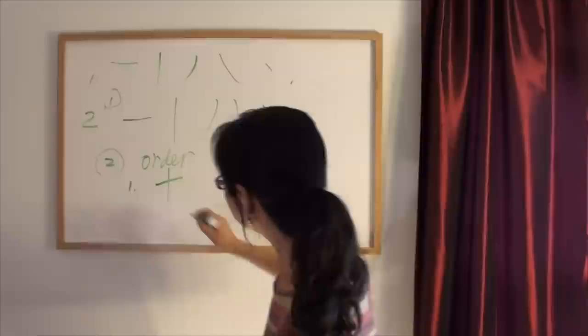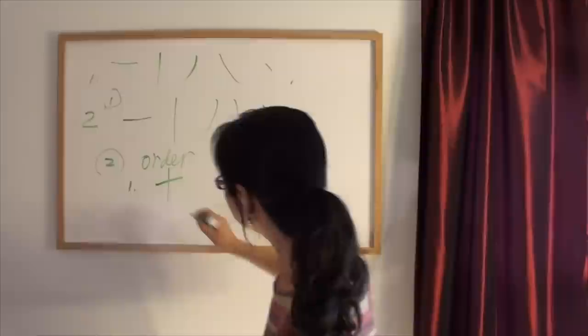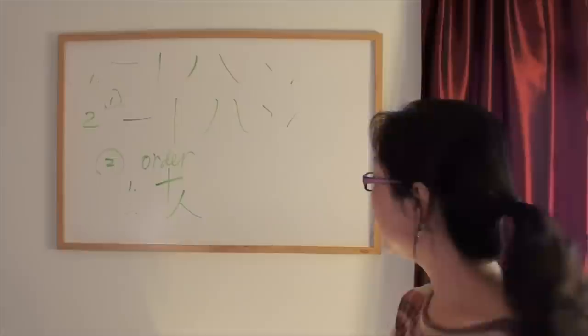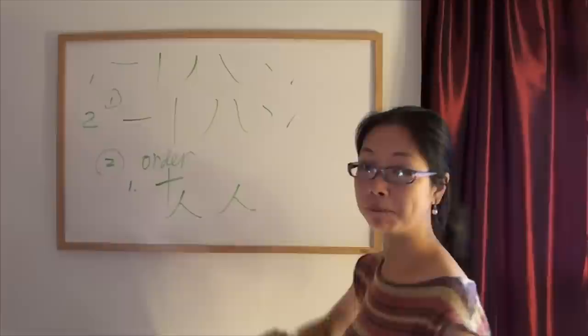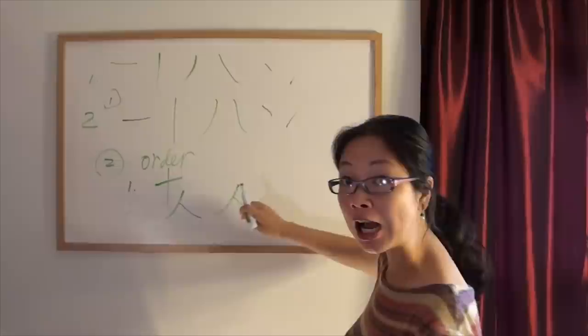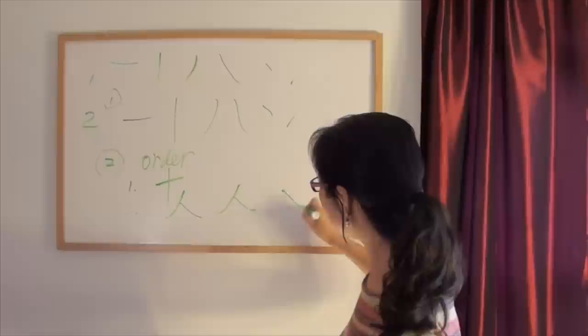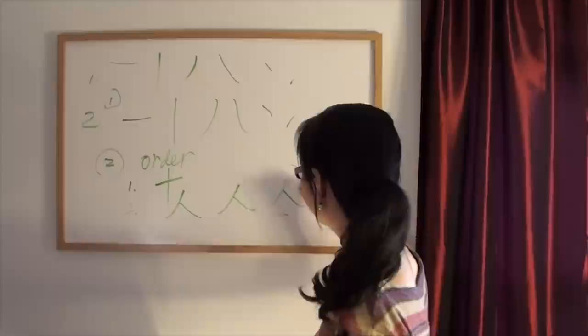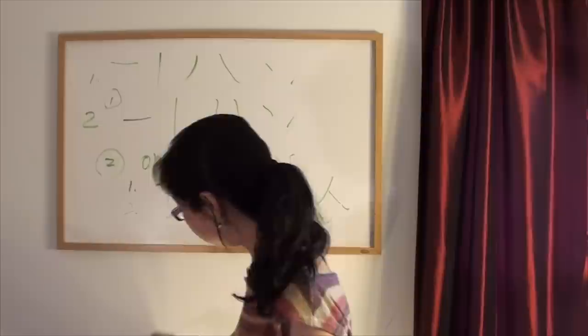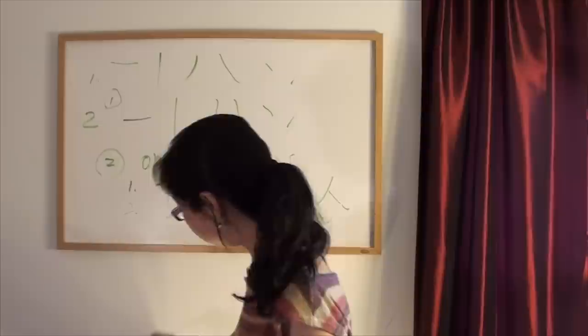Second rule. This character means 'people' — ren. If you pay attention to how I write it: the left-falling stroke should always go before the right-falling stroke. You cannot write the right one first; that's wrong. Rule number two for stroke order is the left-falling stroke always goes before the right-falling stroke.